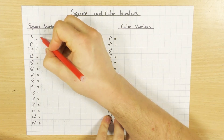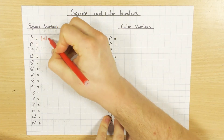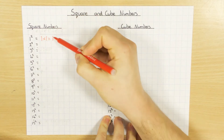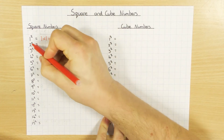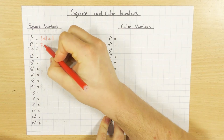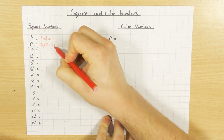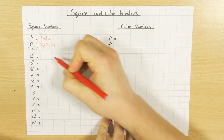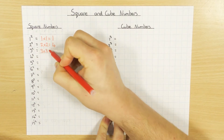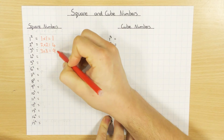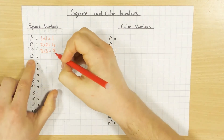Well, a square number just means you times it by itself. So 1 squared would mean 1 times 1, which of course is 1. So 1 is the square number. 2 squared? Well, 2 times 2 is 4. So 4 is the square number. 3 squared? 3 times 3, which is 9. So 9 is the square number. And so on and so forth.